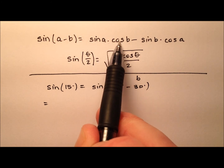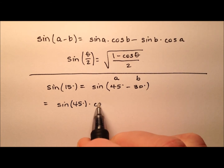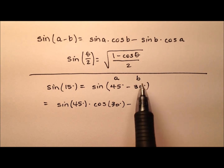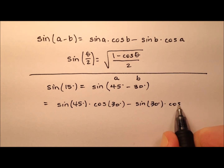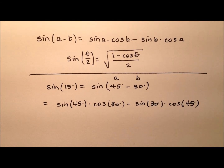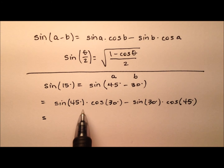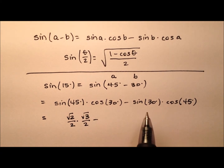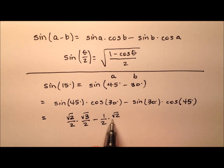So it's the sine of A times the cosine of B — the sine of 45 degrees times the cosine of 30 degrees — and we'll subtract from that the sine of B, which is 30, so the sine of 30 degrees times the cosine of 45 degrees. These are all really nice values that we know because they fall nicely on our unit circle. So the sine of 45 is √2/2, the cosine of 30 is √3/2, the sine of 30 is 1/2, and the cosine of 45 is √2/2.